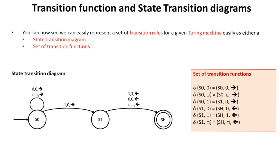You can see how we can easily represent a set of transition rules for a given Turing machine as either a state transition diagram or a set of transition functions. These two things are totally equivalent, and you should expect to be able to generate one from the other in an exam.